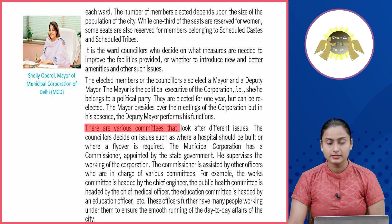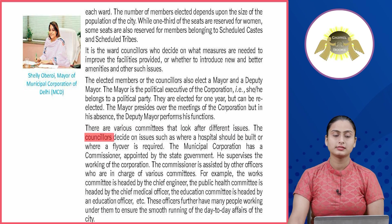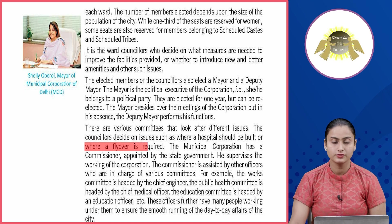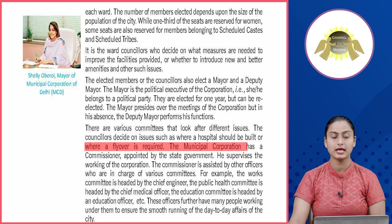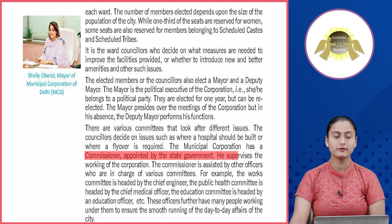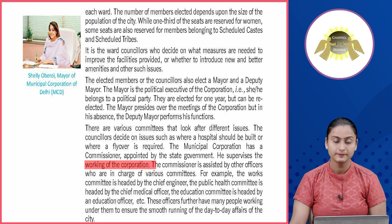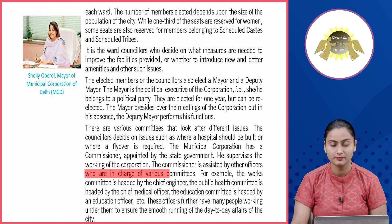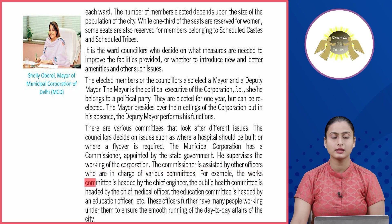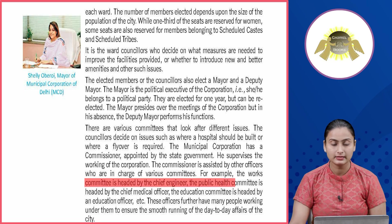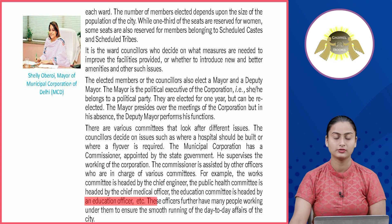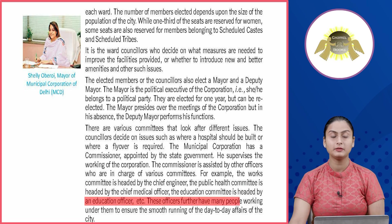There are various committees that look after different issues. The councillors decide on issues such as where a hospital should be built or where a flyover is required. The municipal corporation has a commissioner appointed by the state government who supervises the working of the corporation. The commissioner is assisted by other officers: the works committee is headed by the chief engineer, the public health committee by the chief medical officer, and the education committee by an education officer.